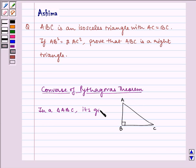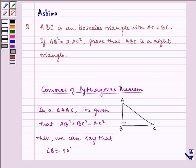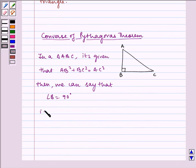if it is given that AB square plus BC square is equal to AC square, then we can say that angle B is equal to 90 degrees. That is, triangle ABC is a right angled triangle.